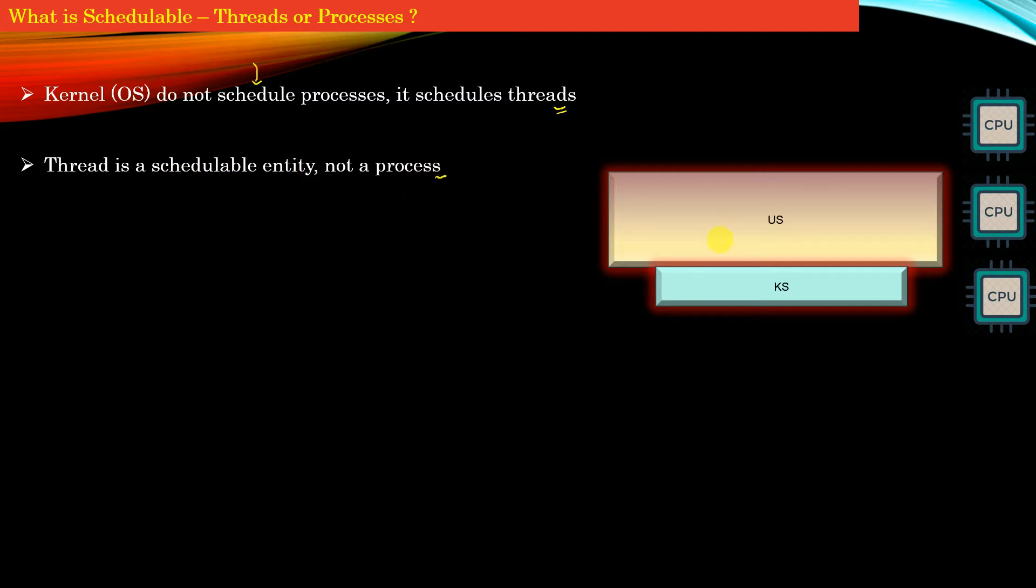In the diagram on the right-hand side, I've drawn a block diagram of a computer system mainly divided into two parts: user space and kernel space. Kernel space is where your kernel or operating system runs, whereas user space is where all your applications run.